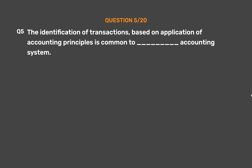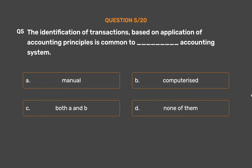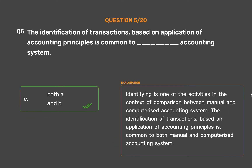Question number 5. The identification of transactions based on application of accounting principles is common to __ accounting system. Option A: Manual. Option B: Computerized. Option C: Both A and B. Option D: None of them. The correct answer is Option C: Both A and B. Identifying is one of the activities in the context of comparison between manual and computerized accounting system.